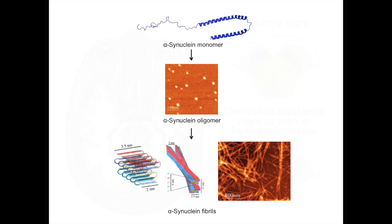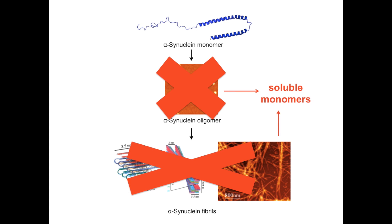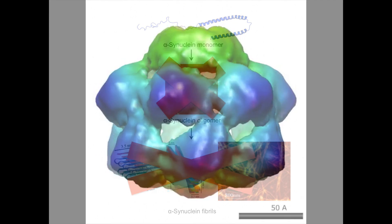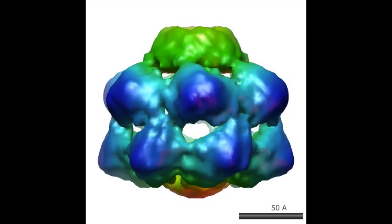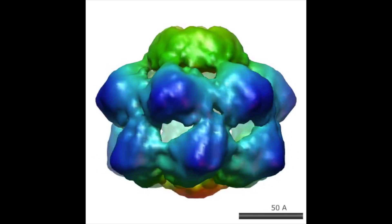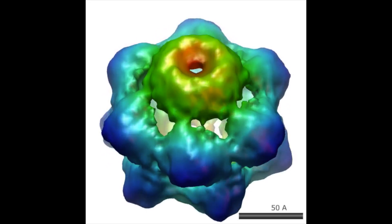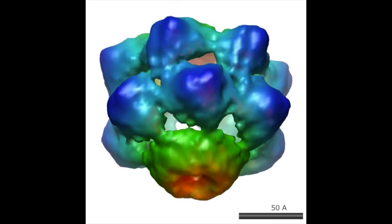Thus, a promising approach to treat alpha-synuclein-mediated neurodegeneration would be to interfere with this aggregation process. HSP-104 is ideally situated as a potential therapy because it is the only known enzyme that can disaggregate preformed protein aggregates.